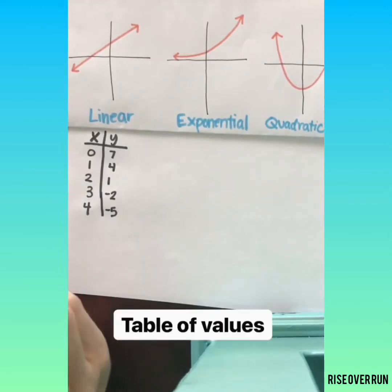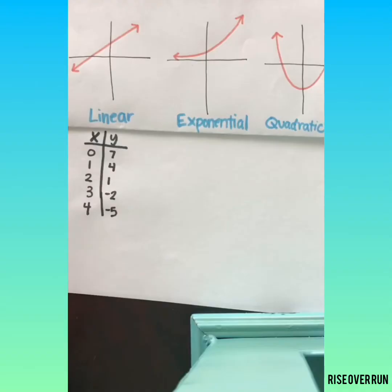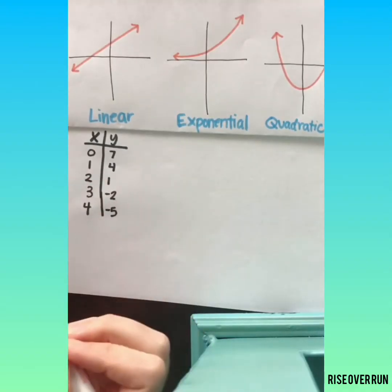Let's look at how to identify what type of relationship you have just looking at a table of values. First thing, take a look at your x values and we'd like these to be counting by the same increment. So if they're all mixed up or missing numbers, you might want to rearrange to make you see what's going on a little clearer.